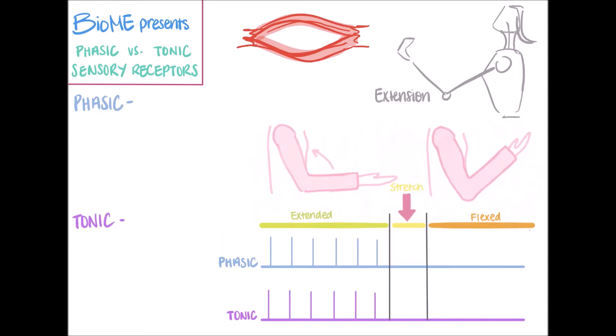Receptors send information to your central nervous system by firing action potentials. Sensory receptors are capable of adapting to constant stimuli by decreasing the amount of signals it is sending to the brain.